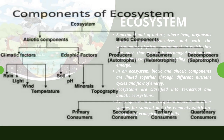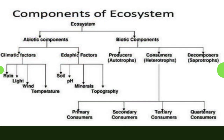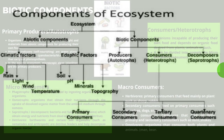Now let us look at the components of ecosystems, which are divided into biotic and abiotic components. Biotic components include the producers, consumers, and decomposers, while the abiotic components include rain, light, wind, temperature, and others.